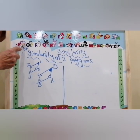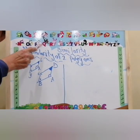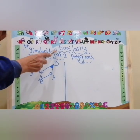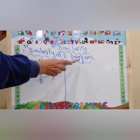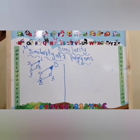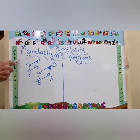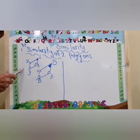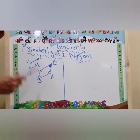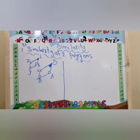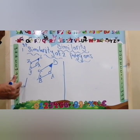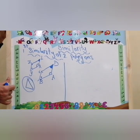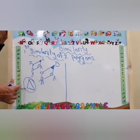Prep 2. Today is a geometry lesson on similarity of two polygons. A polygon is a union of line segments, more than or equal to 3. If we draw this figure, this is a polygon. It's called a triangle.